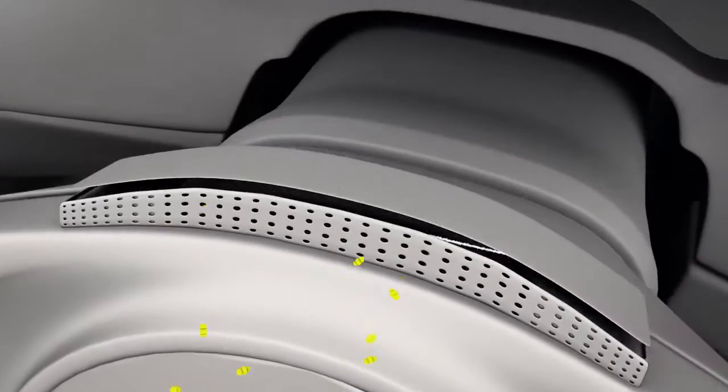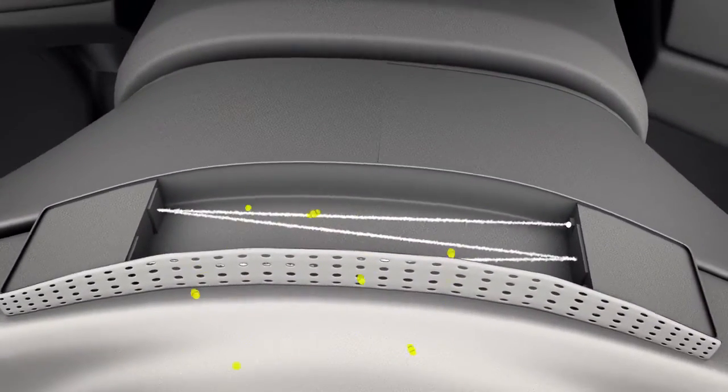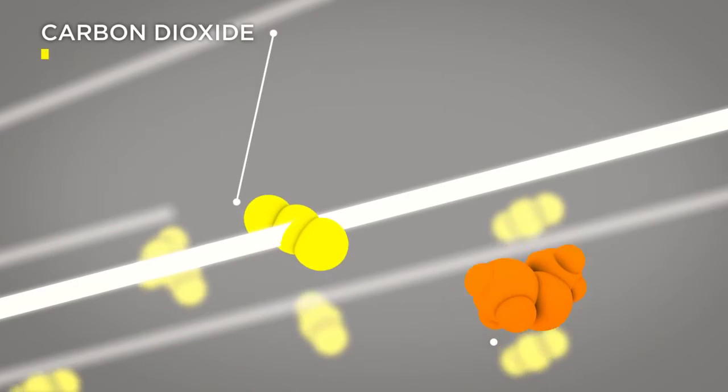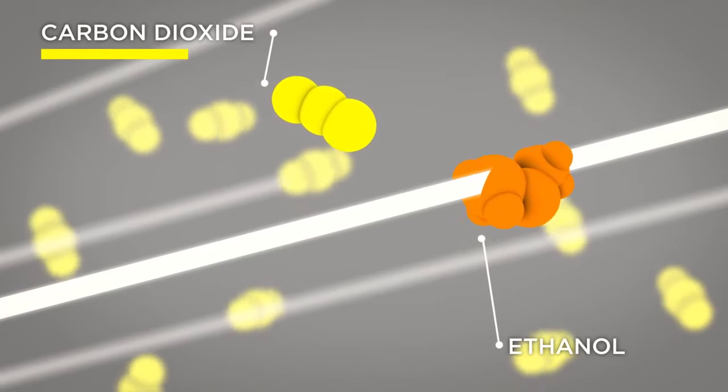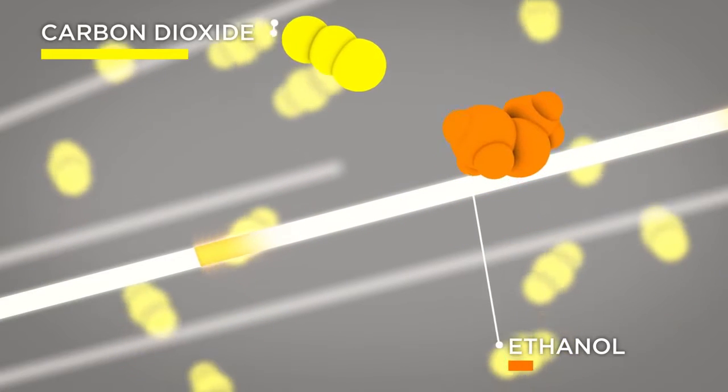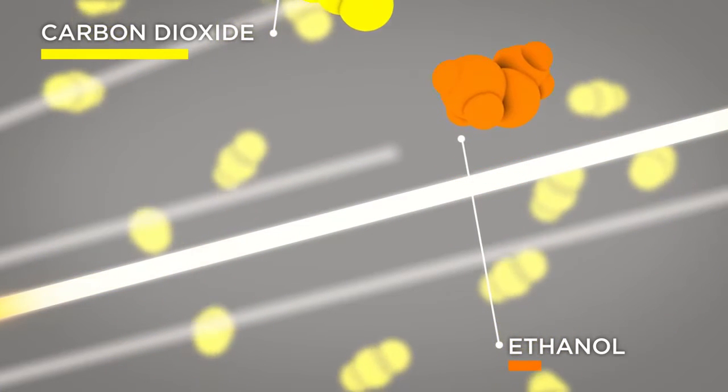A beam of infrared light is then directed at the molecules in the breath. Carbon dioxide and alcohol molecules absorb different amounts of light, and the sensor can compare the two, making it easy to measure alcohol levels precisely, even at very small concentrations.